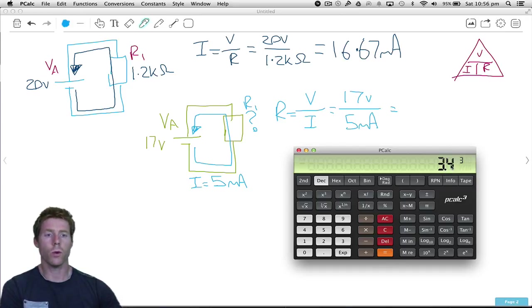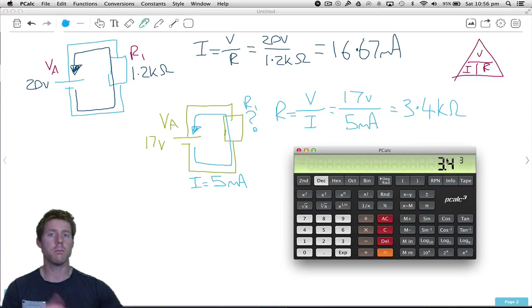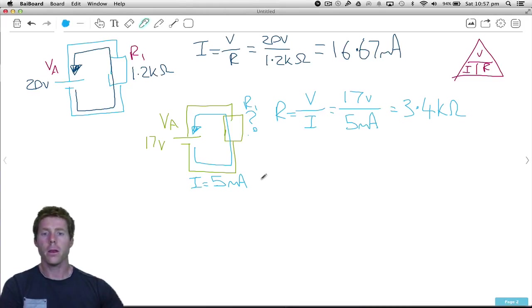Equals 3.4 and then we've got a 3 there. So that means it's 3.4k. Just remember the negative 3 means milli. The positive 3 or the 3 without a sign means k. If it was a 6 it would be meg. If it was a negative 6 it would be micro. So the negative means we're below the base unit. The positive means we're greater than the base unit. So this resistor must be a 3.4k resistor.